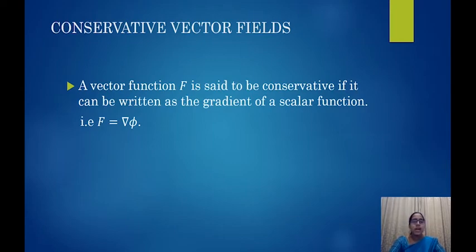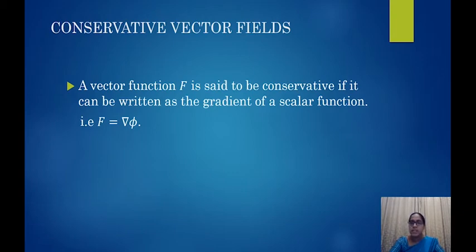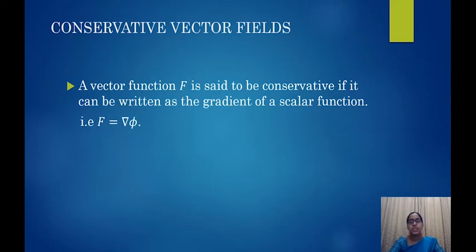The definition is as follows: a vector function is said to be conservative if it can be written as the gradient of a scalar function. That is, if you have a vector function F and a scalar function phi, and if F equals the gradient of phi, then we say the vector function F is conservative. For such functions, the path of integration value will remain the same.